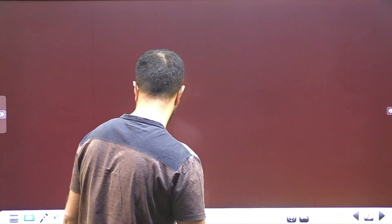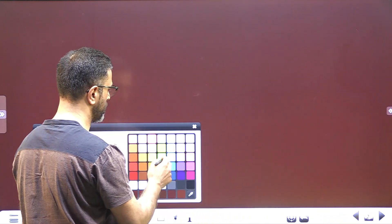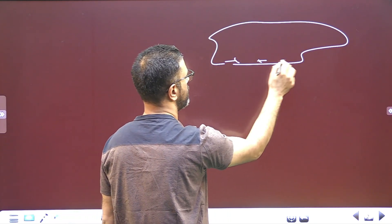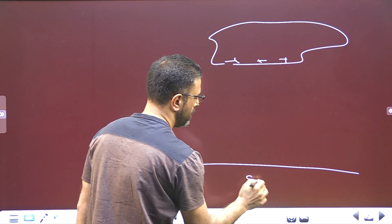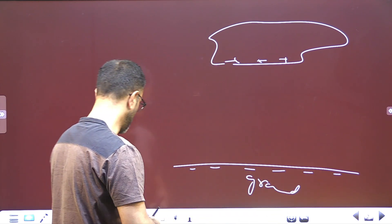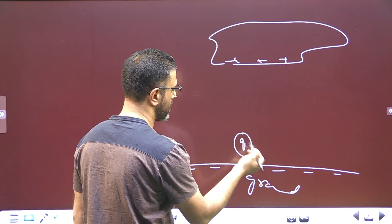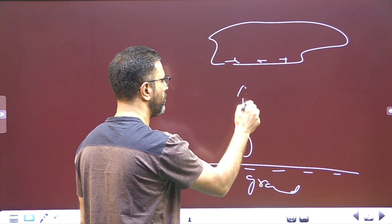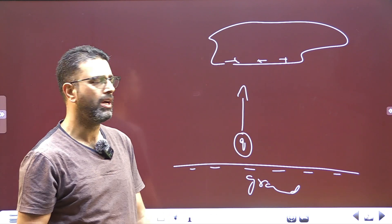So, we have a similar situation that was there in the previous session. We have some cloud here, say positively charged, ground which will be negatively charged, negative charge will be induced. Some charge is transferred, charge Q is transferred between the two. Say, some negative charge is transferred from ground to the cloud or positive from whatever.